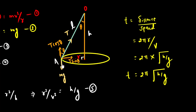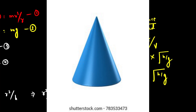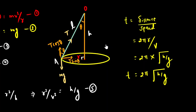This is called a conical pendulum because when the string traces a horizontal circle during rotation, it forms a cone shape. A simple pendulum oscillates back and forth, whereas a conical pendulum traces a cone as it rotates. That is why it is called a conical pendulum.